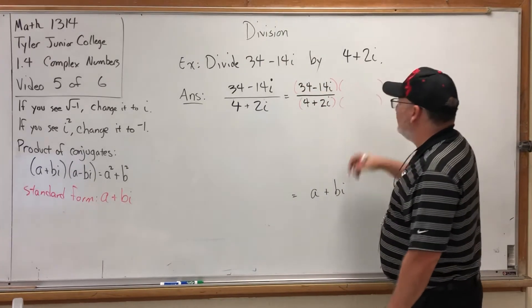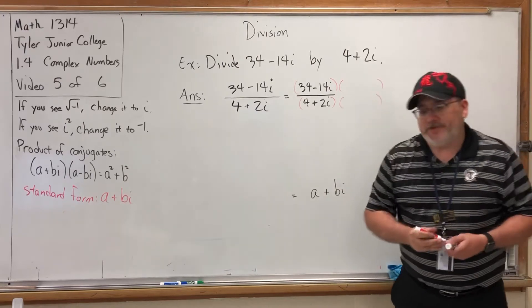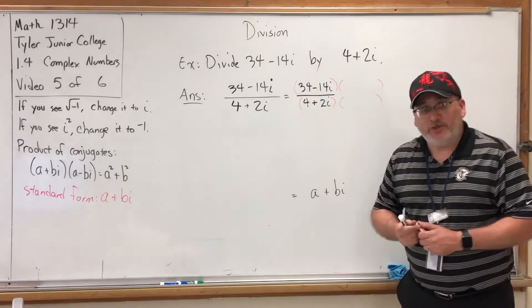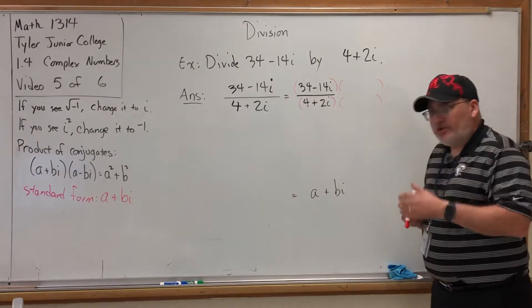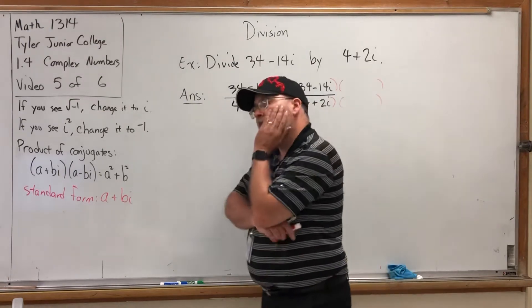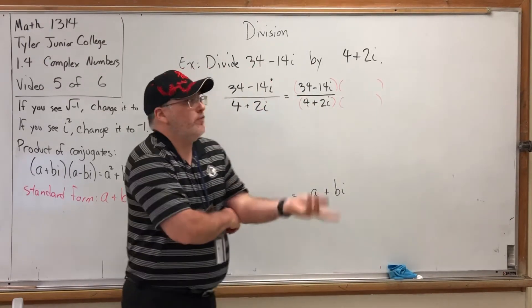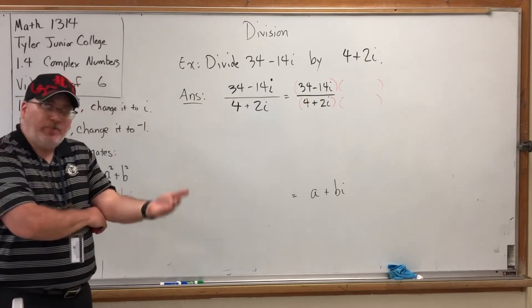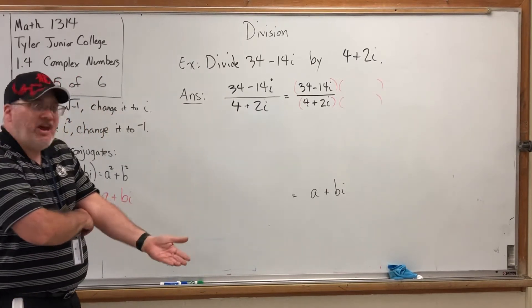Number one: I can multiply both sides of this fraction by anything I want except zero, provided I use the same multiplier on both sides. Number two: I want the i in the denominator to disappear. So what can we multiply 4 + 2i by that would, upon multiplying, not have an i in it—in other words, be real?